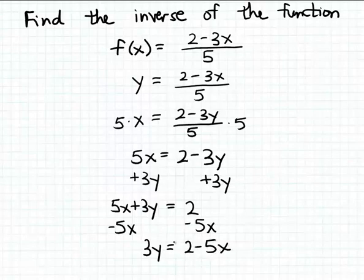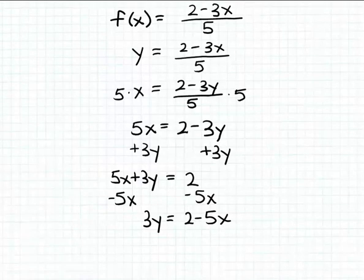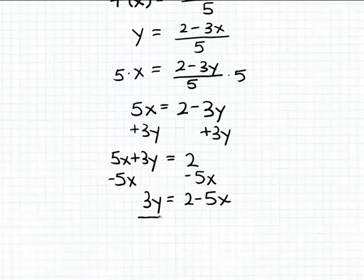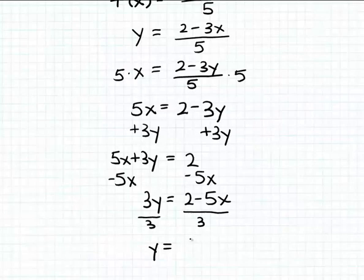And now to finish isolating y on one side of the equation, I'm just going to divide both sides of this equation by 3. So when we solve this equation for y, we get y is equal to 2 minus 5x divided by 3. And that's the formula for the inverse function.